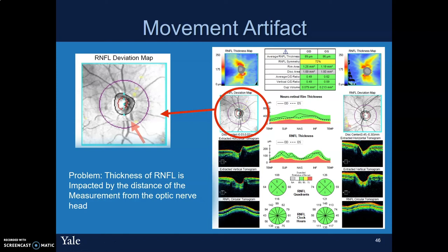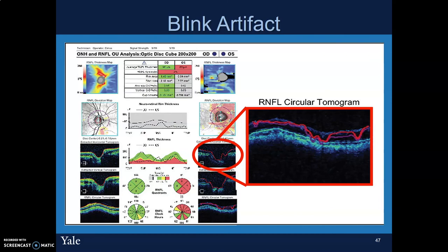Here is the movement artifact. If we look at the deviation map, the blood vessels are not continuous because the patient moved their eye or moved themselves during the scan. Similar in concept to the decentration artifact, because RNFL thickness is impacted by distance from the optic nerve head, we're going to get errors as a consequence. Here's another familiar artifact — the blink artifact. If we look at even just the regular thickness map, we can see the patient likely blinked, resulting in poor scan quality and generalized depression on the quadrant analysis and average RNFL.